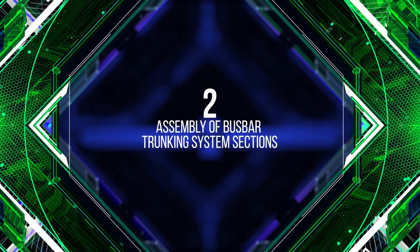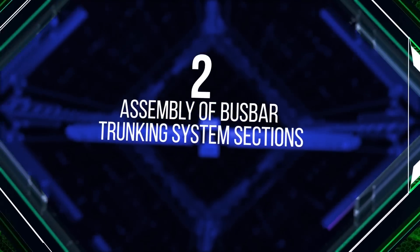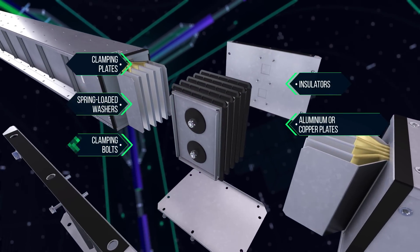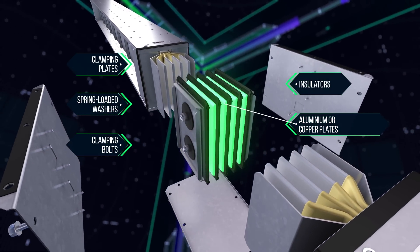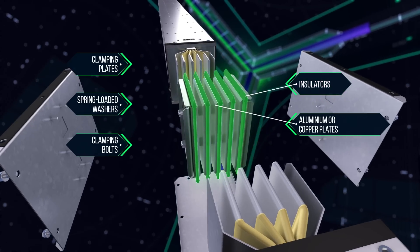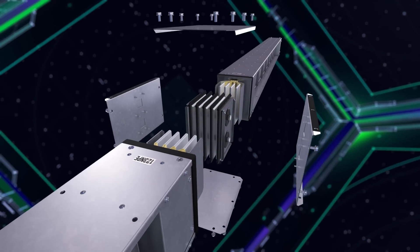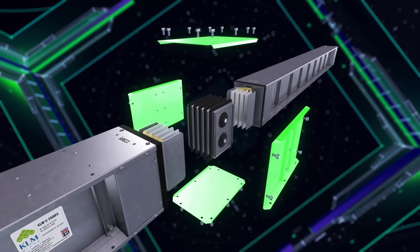Assembly of bus bar trunking system sections. Connect the sections using a junction unit consisting of aluminum or copper plates insulated from each other, insulators, clamping plates, bolts with spring-loaded washers, and top, bottom, and two side covers with plugs.